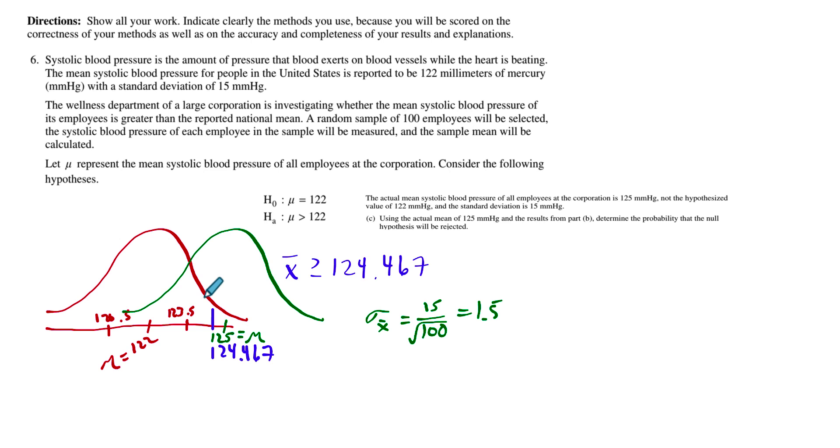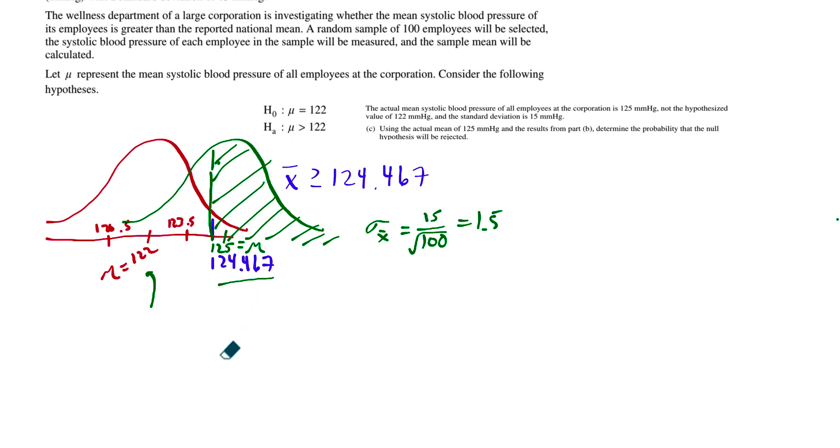We're getting a lot of colors on here and a lot of different things. But with the real life curve, the mu is 125, the standard deviation of our sampling distribution is still the same, 1.5. They didn't change that. And that value, 124.467, is the value where we start rejecting the null, which is 122. So I'm going to draw that down and shade it. The shaded region is when we will reject the null.